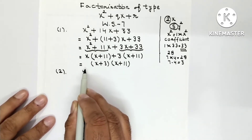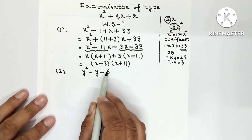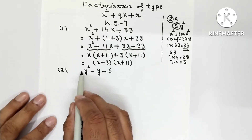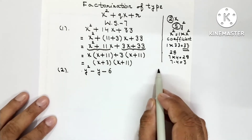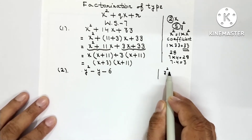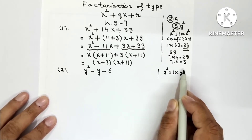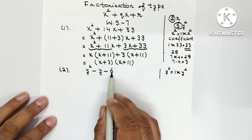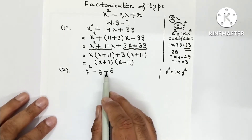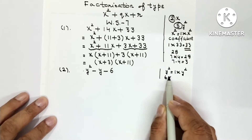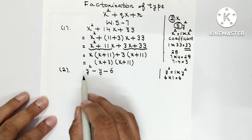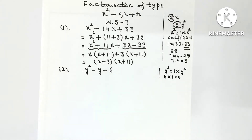Question number 2: y square minus y minus 6. Coefficient of y square is 1, because y square equals 1 into y square. Constant term is 6. So 6 into 1 gives 6. Now find two numbers whose product is 6 and whose sum or difference gives 1, the coefficient of y. Those numbers are 3 and 2: 3 multiplied by 2 is 6, and 3 minus 2 is 1.